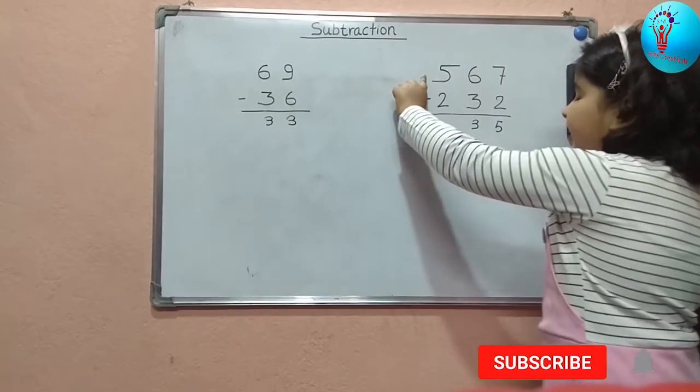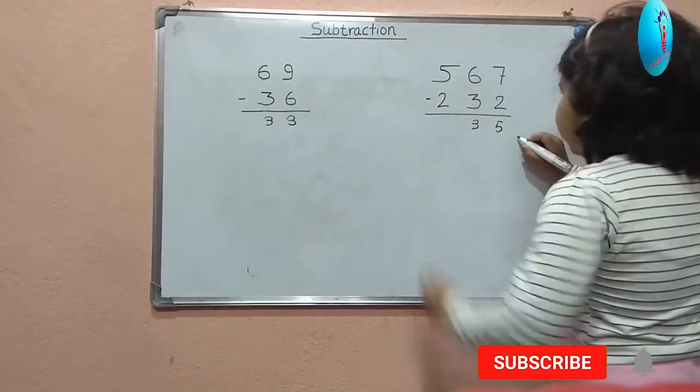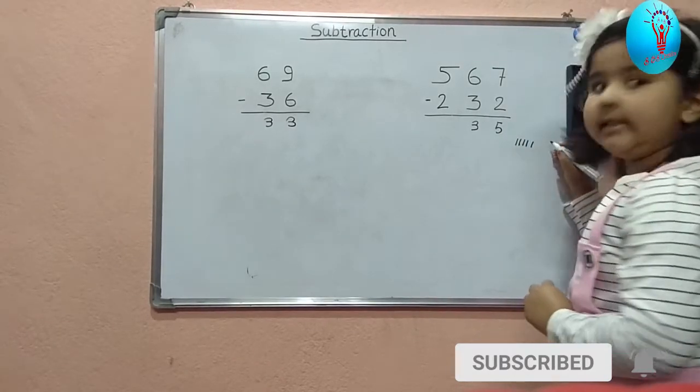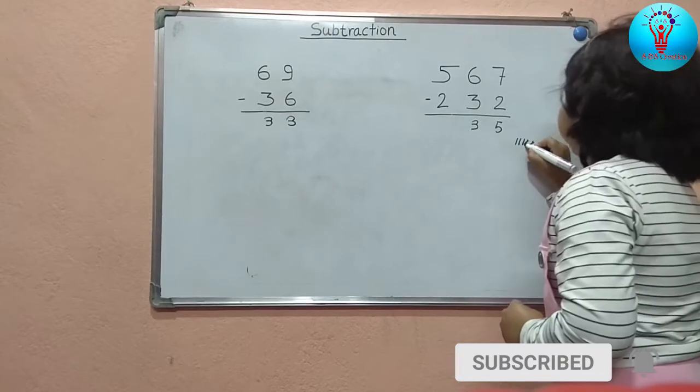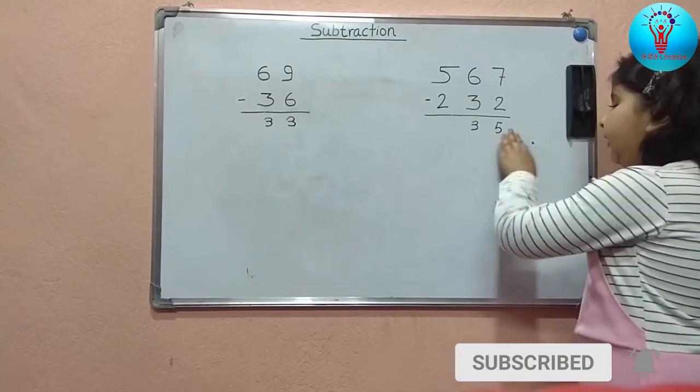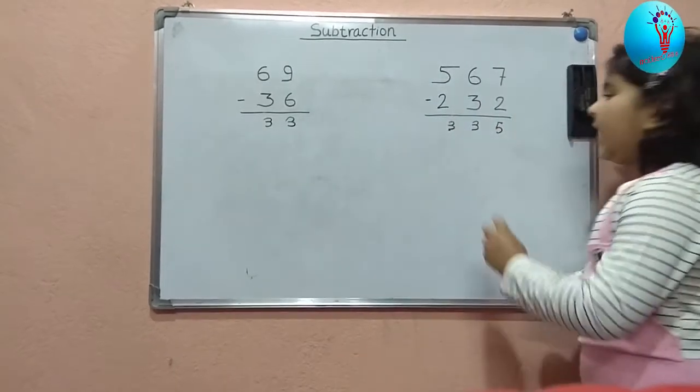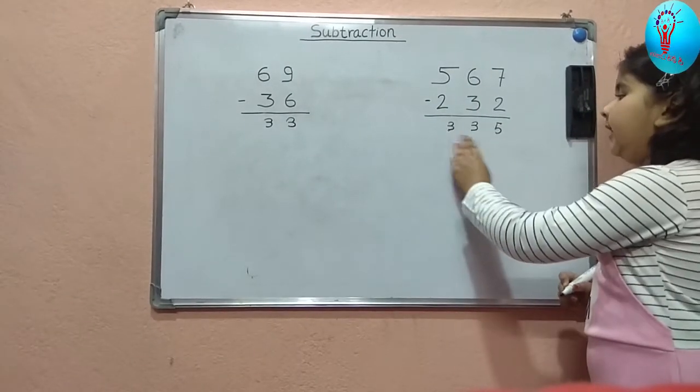Now 5 and 2. Let's do first 1, 2, 3, 4, 5 lines. I'm going to cut how much? 2. 1, 2. So this answer is 3. So the answer is 335.